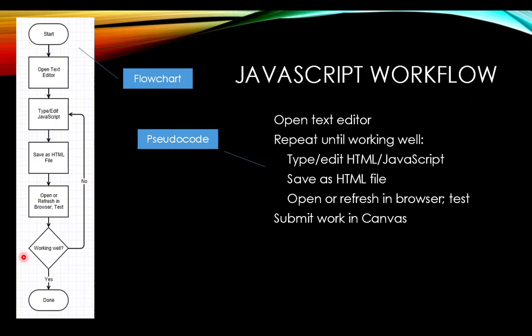We can describe the whole JavaScript workflow the following way. Open the text editor, type or edit your script, save it. Then open it or refresh it in the browser, test it, and find out how it's doing — is it working? If the answer is yes, then you're done and you can go submit the work. If not, you come back up, edit some more, save it, open a refresh in the browser, and test again. You continue doing this again and again until it's working well, and then you are done. A flowchart is a great way to represent that — it's easy to see what's going on.